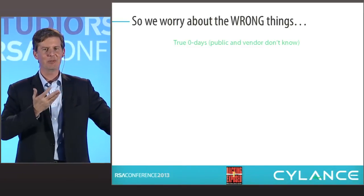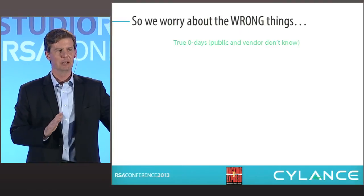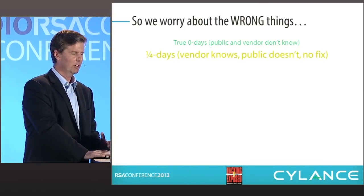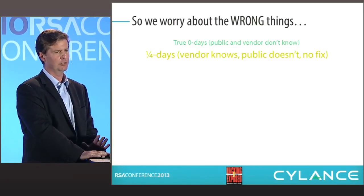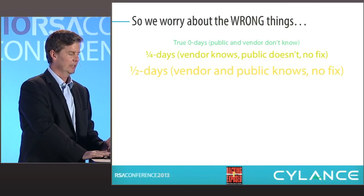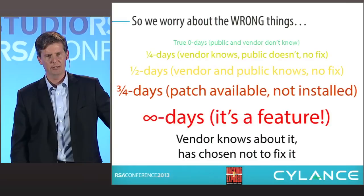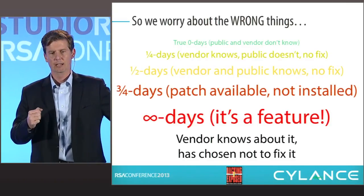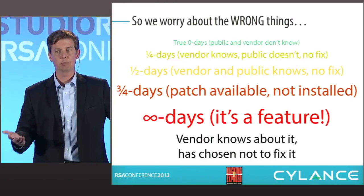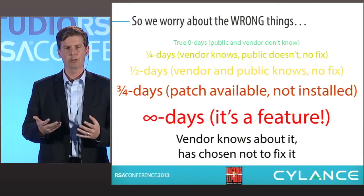Everybody worries about the zero-day problem, and it is a problem, but honestly that is the least of our worries. We have more challenges: quarter-days — where the vendor knows but the public doesn't and there's no fix, but the bad guys know; half-days — vendor and public know but there's no fix yet; three-quarter days — the patch is available but no one's installed it; and what we call forever-days or infinite-days — because the vendor thinks it's a feature. Simple steps can be taken in the design process to avoid these.